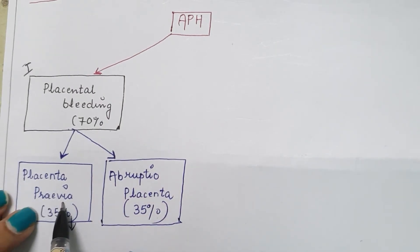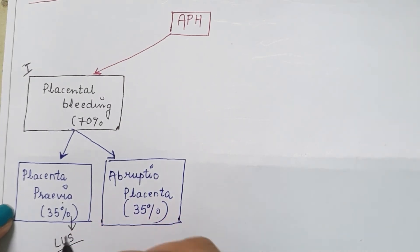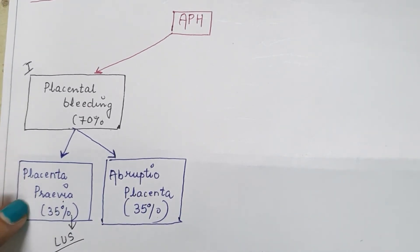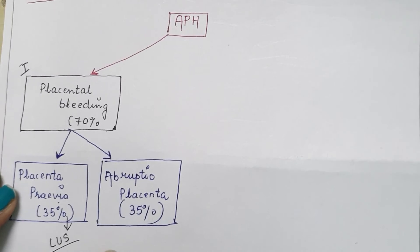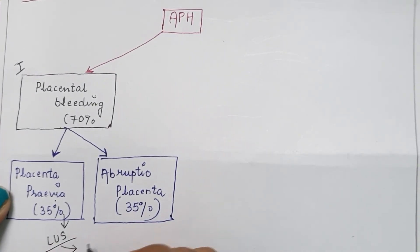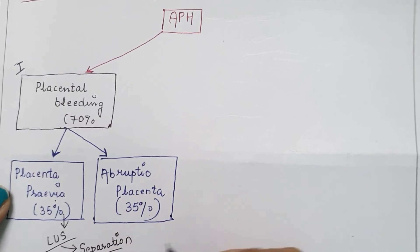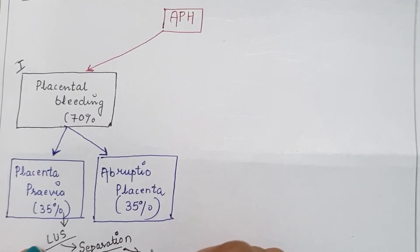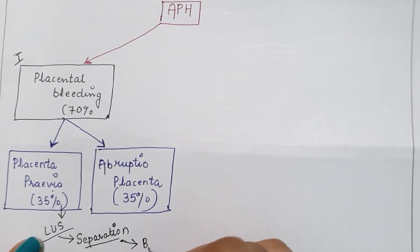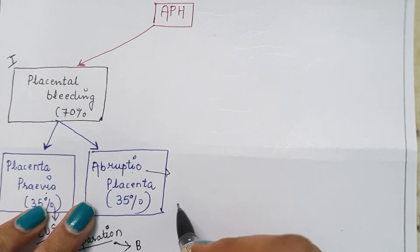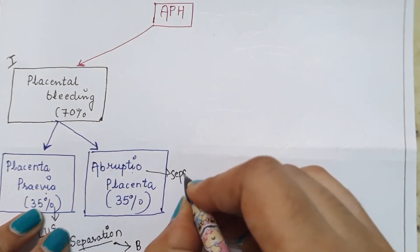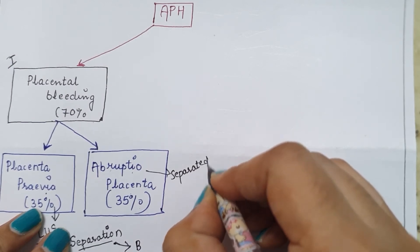In placenta previa, the placenta is attached at the lower uterine segment. Normally it is attached at the upper uterine segment, but in this case it is at the lower uterine segment. As it is loosely attached there, there are chances of premature separation before the birth of the baby, which leads to bleeding. In abruptio placenta, the placenta is separated before the birth of the baby, which also leads to bleeding.